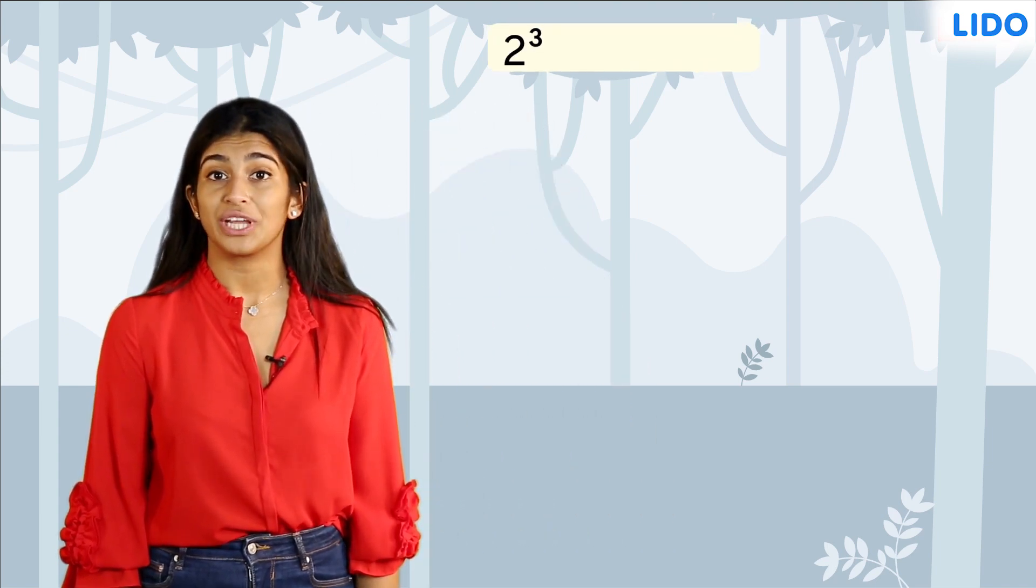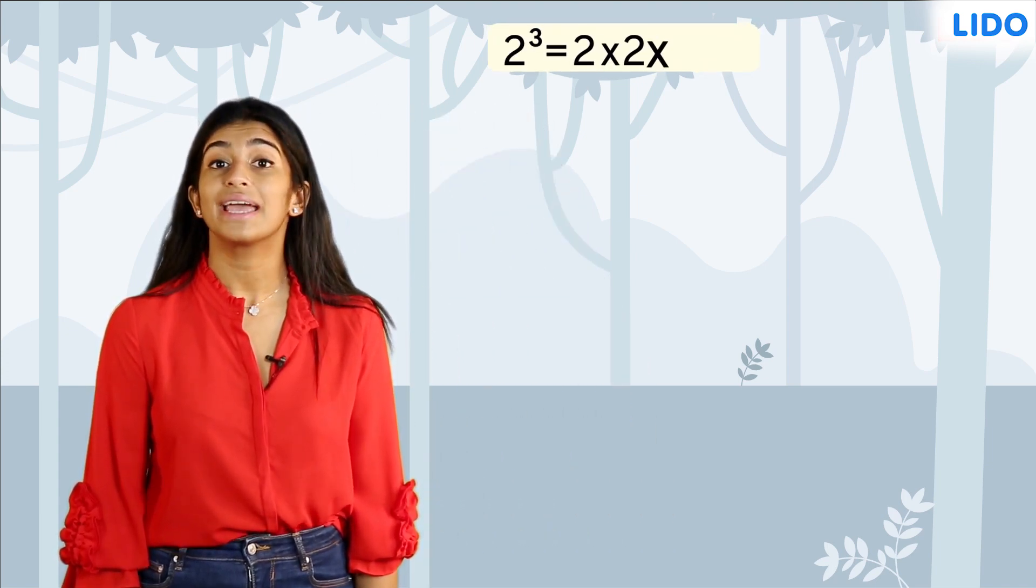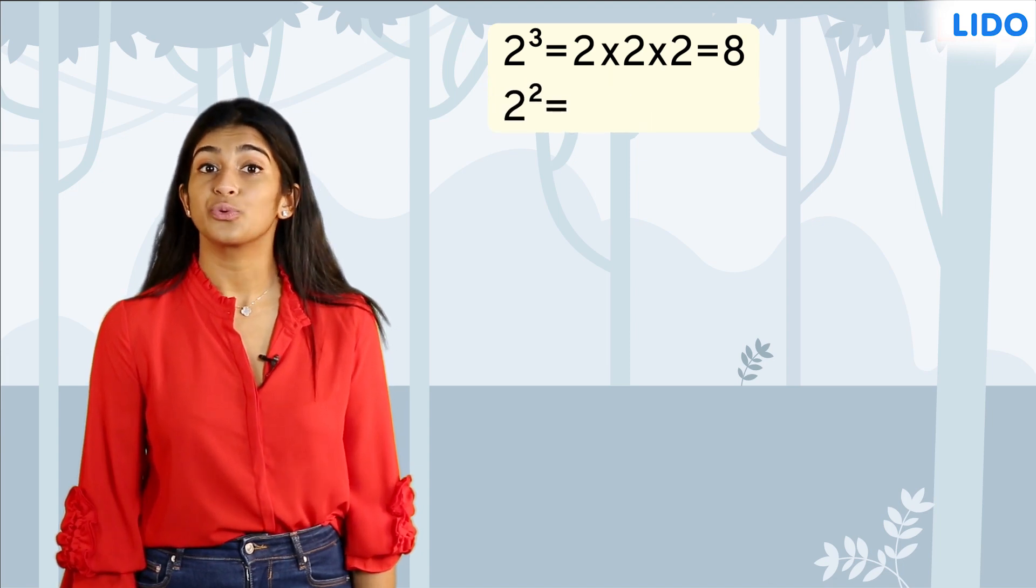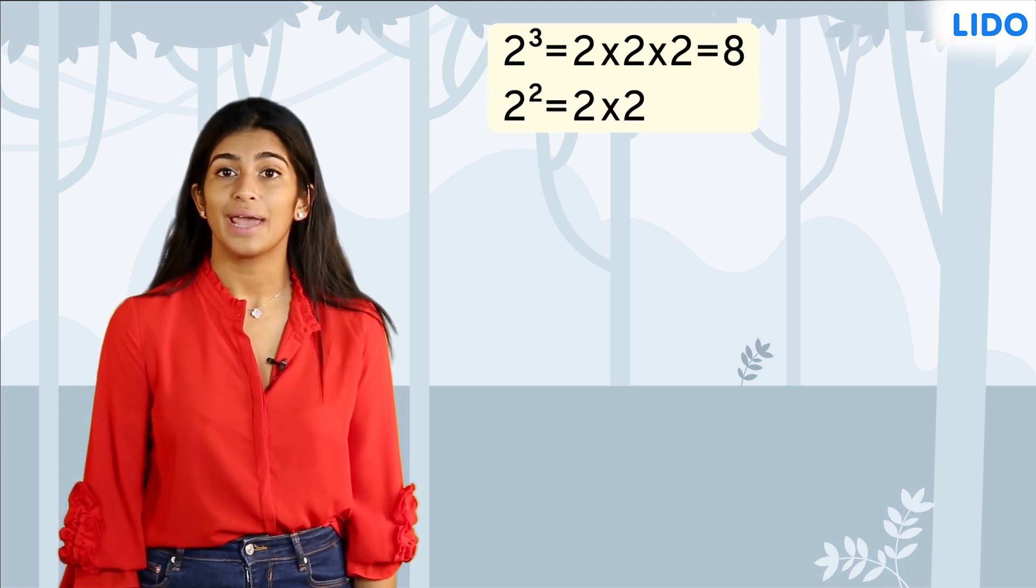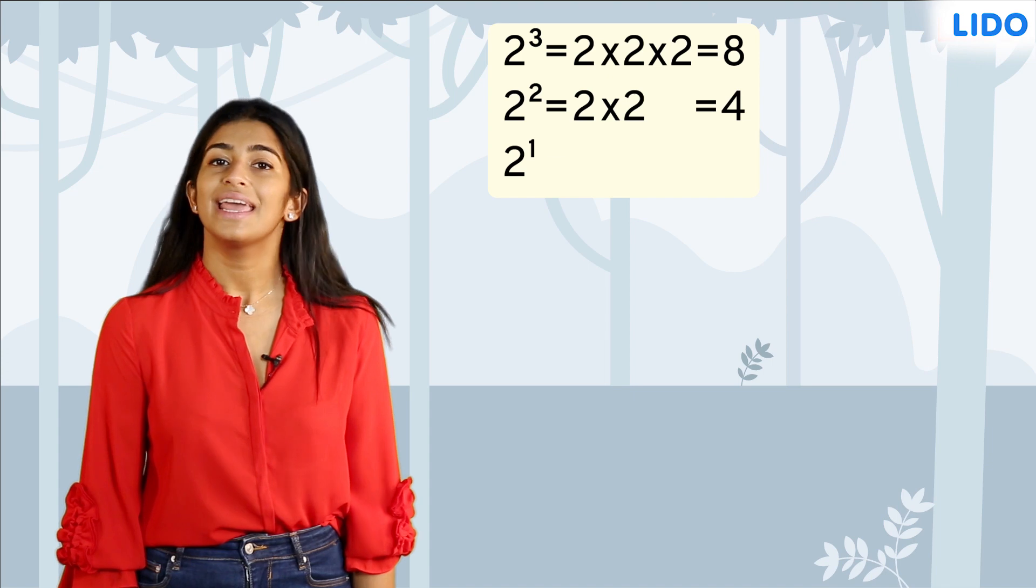We know 2 raised to 3 is equal to 2 multiplied by itself 3 times. 2 raised to 2 is multiplied by itself 2 times, and 2 raised to 1 is 2.